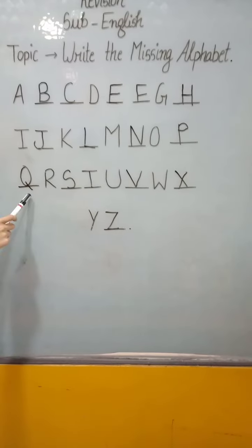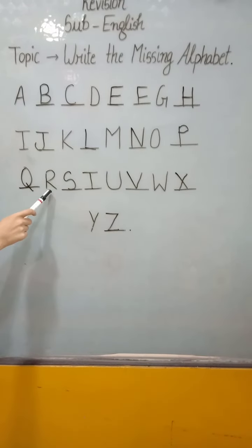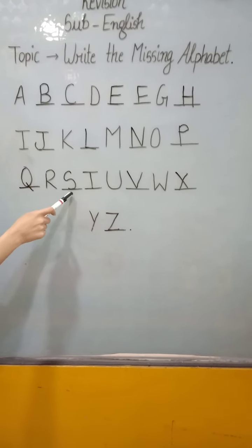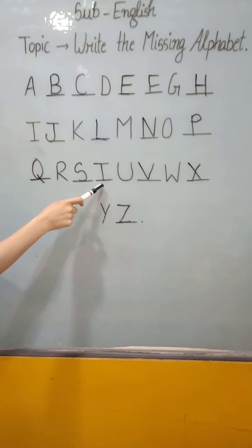P for Prince. Q for Queen. R for Rat. S for Sun. T for Tiger.